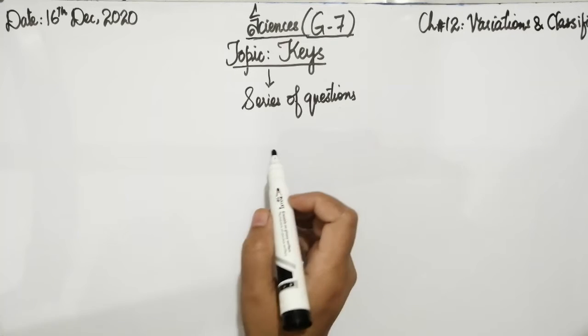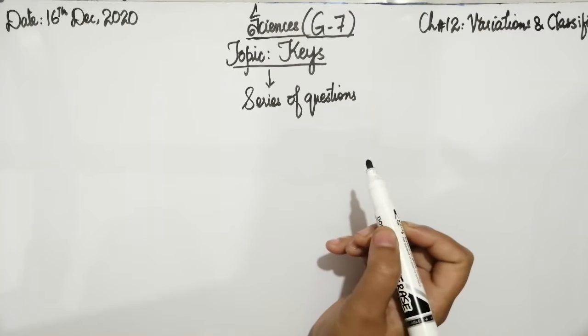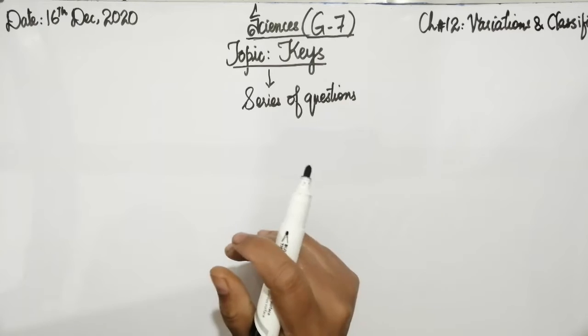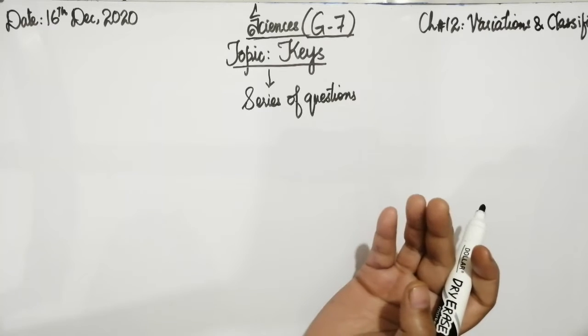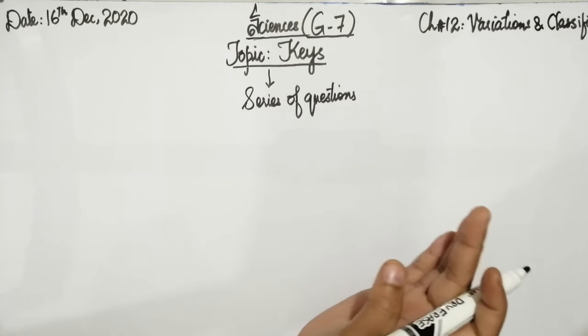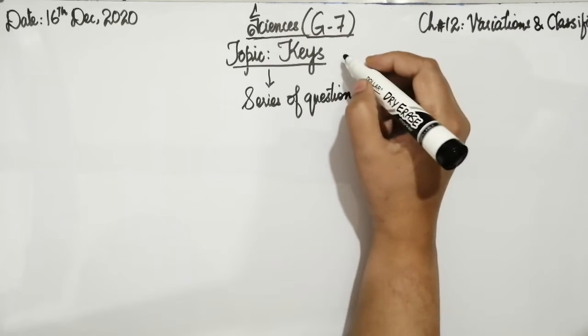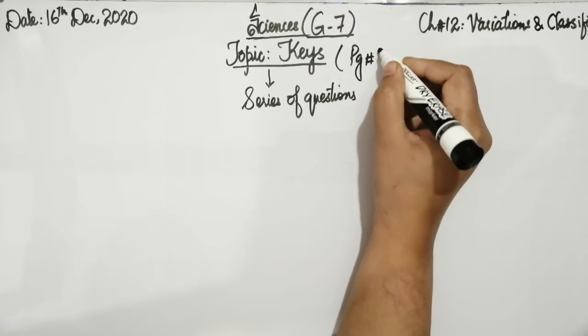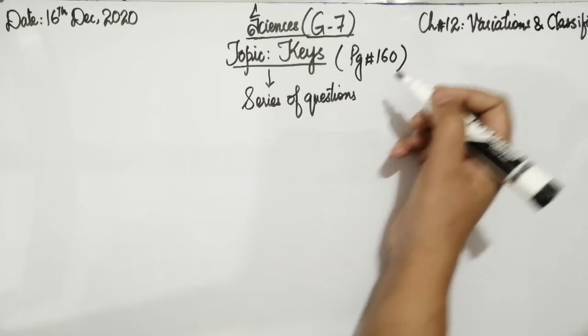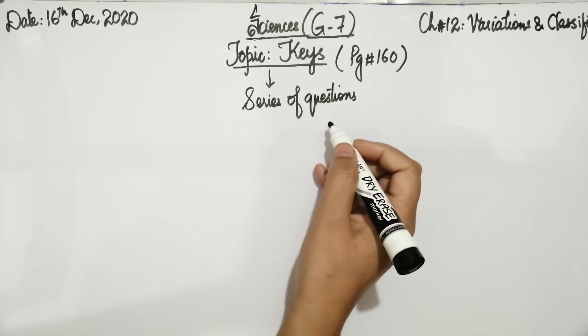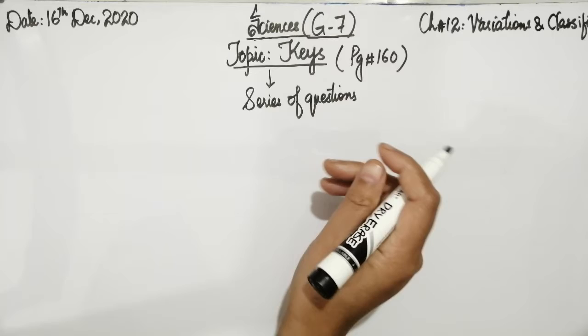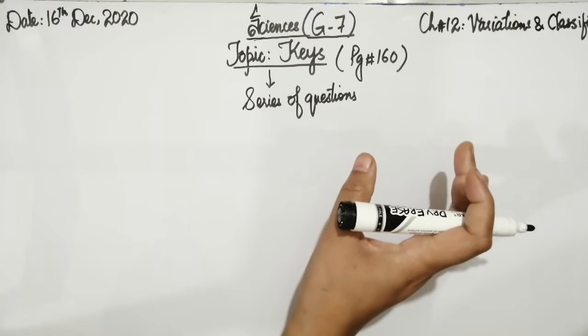So here is a simple key to find the names of four unknown animals which are shown opposite to each other. These are all four organisms that you have in the book page number 160. We are going to identify them.